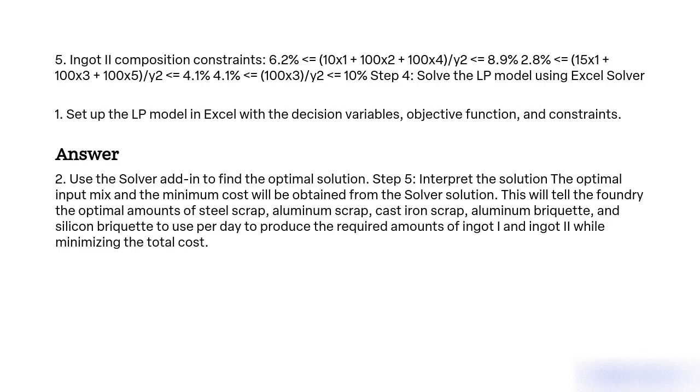2. Use the Solver add-in to find the optimal solution. Step 5: Interpret the solution. The optimal input mix and the minimum cost will be obtained from the Solver solution. This will tell the foundry the optimal amounts of steel scrap, aluminum scrap, cast iron scrap, aluminum briquette, and silicon briquette to use per day to produce the required amounts of ingot I and ingot II while minimizing the total cost.